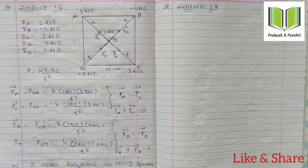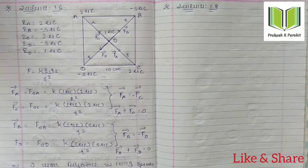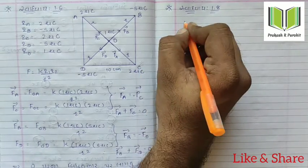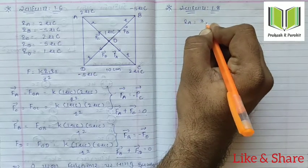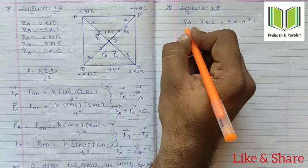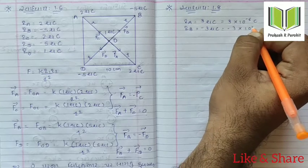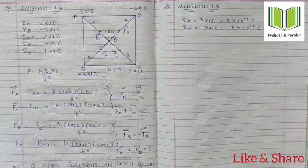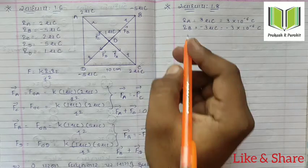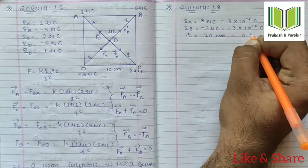Today we will look at example number one. Point charges qa is equal to 20 microCoulombs and qb is equal to 3 microCoulombs are placed 20 centimeters apart in vacuum. The first charge qa has value 20 cm, and the distance r is 0.20 meters.